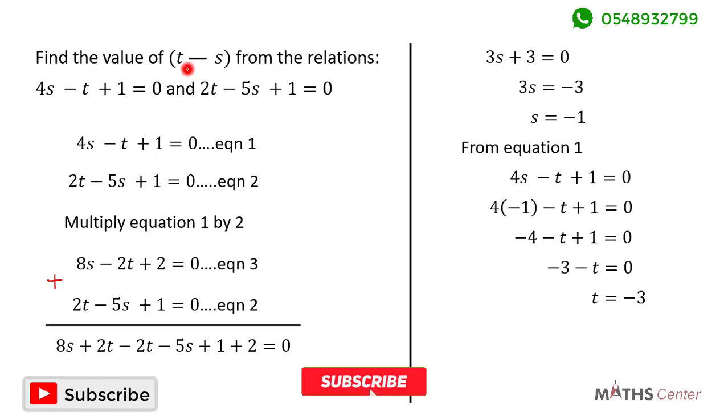The question says we should find t minus x. And so t minus x will be equal to t, which is negative 3, minus x, which is negative 1.